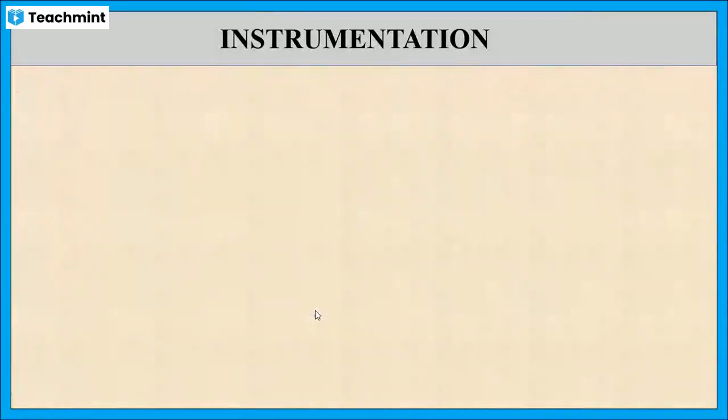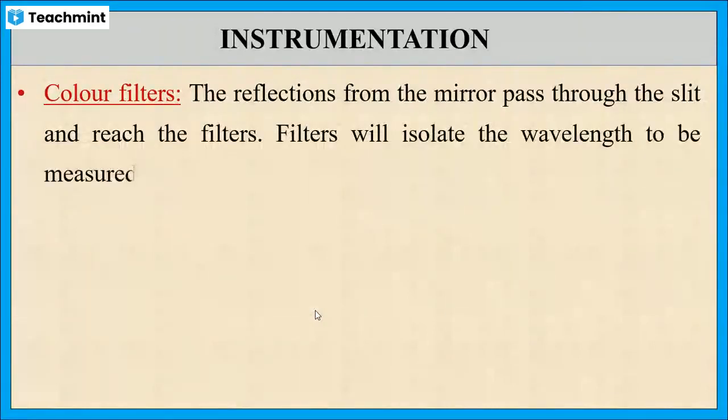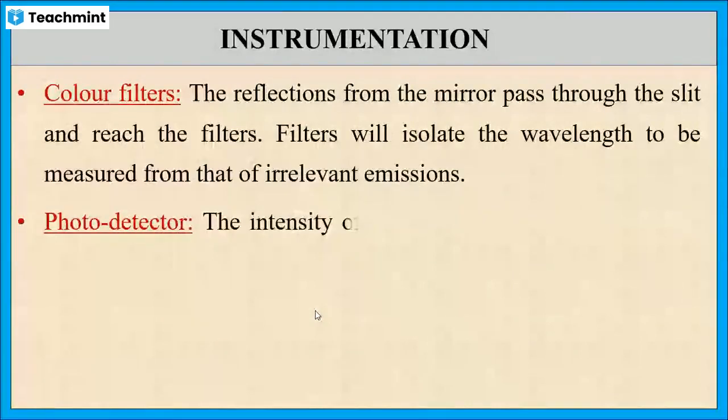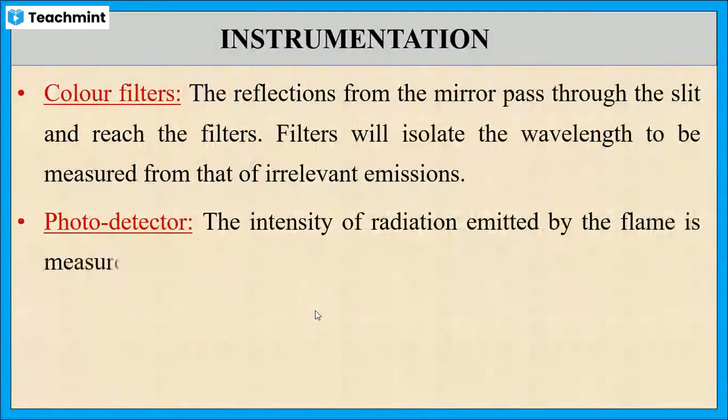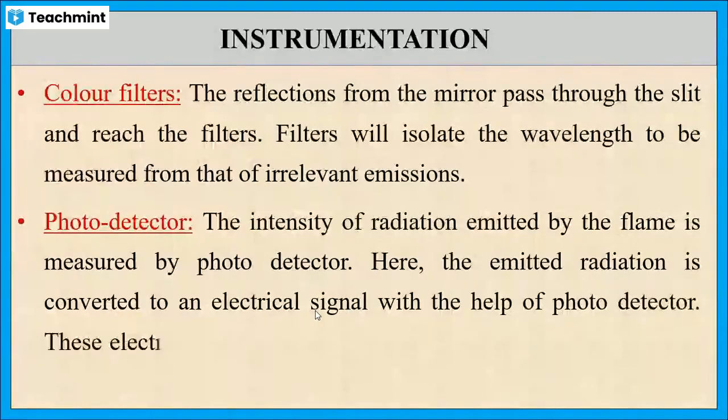The filter isolates the wavelength to be measured from the emitted radiations and the photo detector converts the emitted radiation into electrical signal which is directly proportional to intensity of the light.